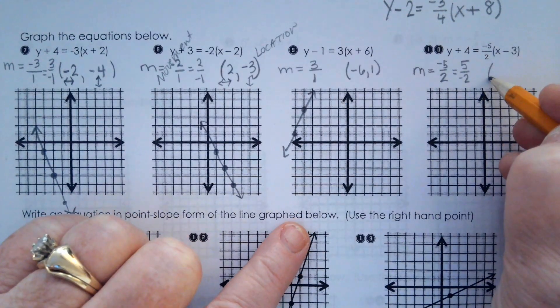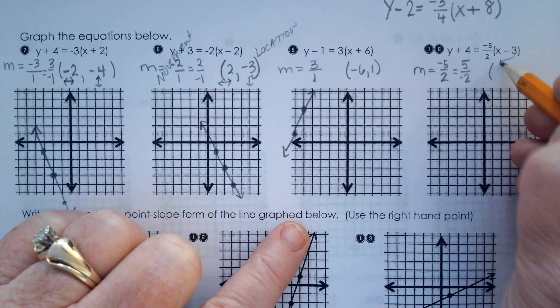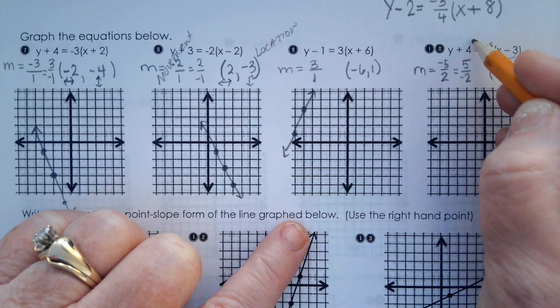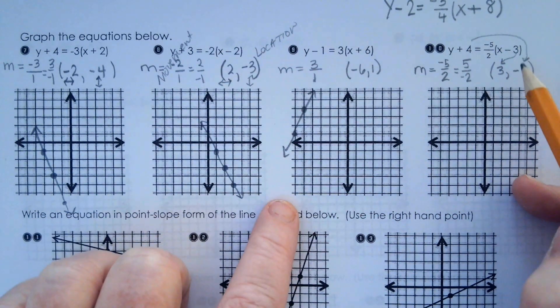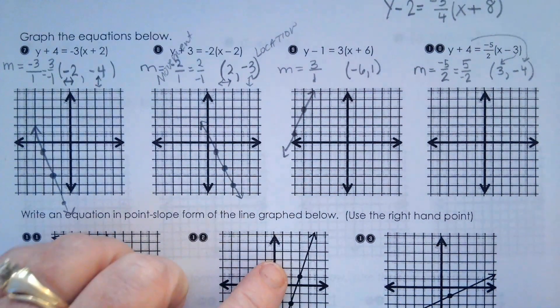What's the ordered pair? 3 comma negative 4. So it's the opposite of what you see for the ordered pair.